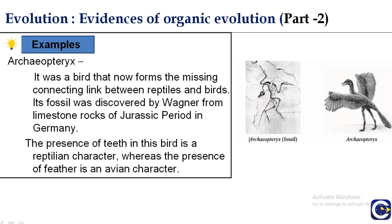Archaeopteryx is a very well-known example of a connecting link — it is actually a missing link. Archaeopteryx was a bird but is now present only as a missing link between reptiles and birds. Its fossil was found by Wagner from limestone rocks of the Jurassic period in Germany. The presence of teeth in this bird is a reptilian character, while the feathers present in Archaeopteryx show the avian character. Because of the presence of both teeth and feathers, Archaeopteryx forms a missing connecting link between reptiles and birds.